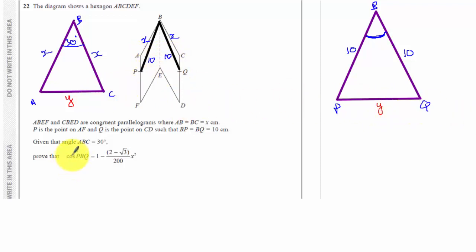To prove that the cosine of PBQ is this expression, I need to know the formula for the cosine of an angle. So if you don't know your formulas when you walk in, you're really going to struggle on this question. It's hard enough as it is without not knowing your formulas.